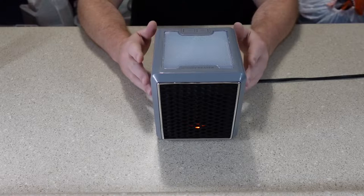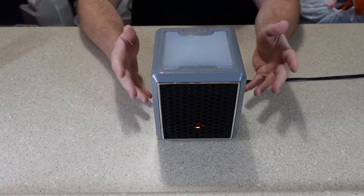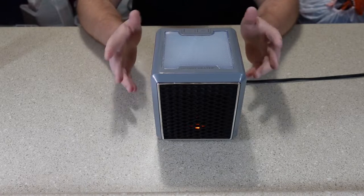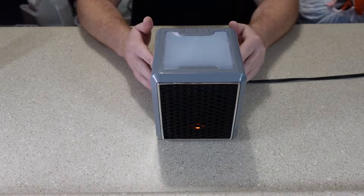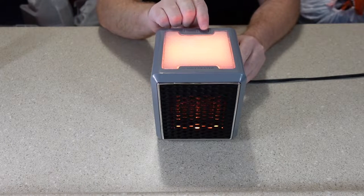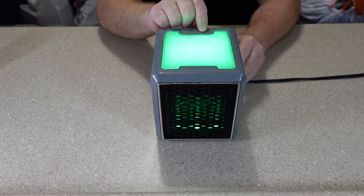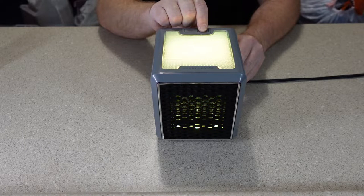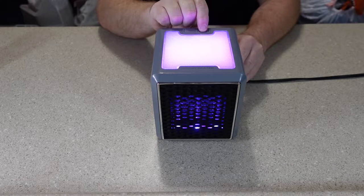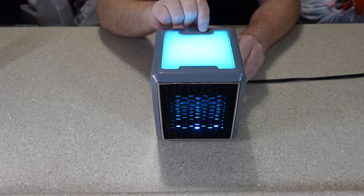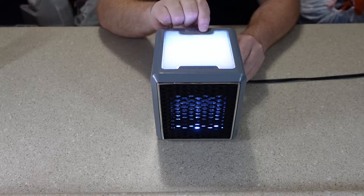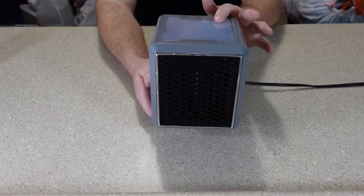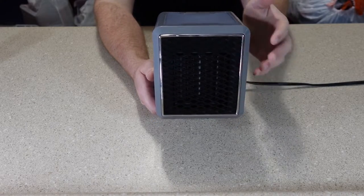It does have color changing mood lights and on the Arctic Air I really didn't care all that much about it. On this I like them a little bit better and let me show you the different colors and I'll show you why I like these a little bit better than what was on the Arctic Air. And on the handy heater you don't just get the mood light on the top you can actually see it through the front grill grates of the heater.